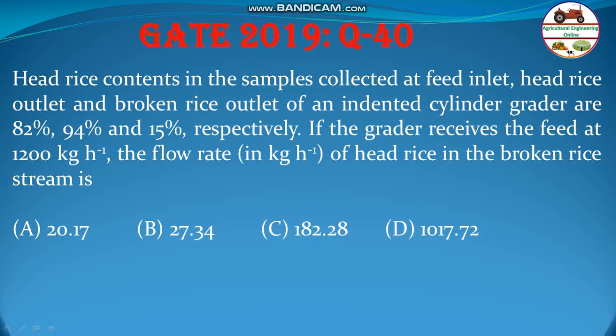Head rice contents in the sample collected at feed inlet, head rice outlet and broken rice outlet of an indented cylinder grader are 82%, 94% and 15% respectively. If the grader receives the feed at 1200 kg per hour, the flow rate in kg per hour of head rice in the broken rice stream is this.